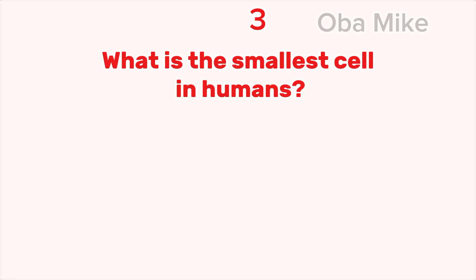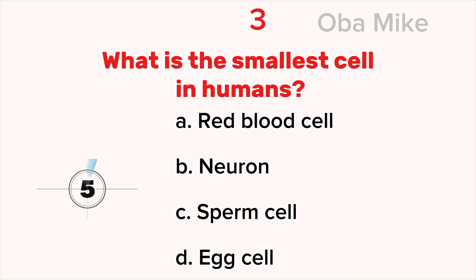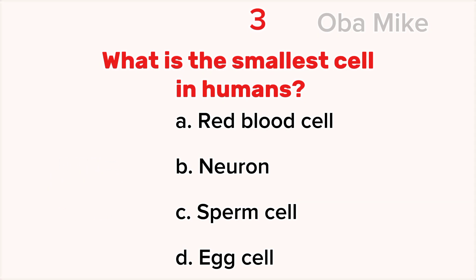3. What is the smallest cell in humans? A. Red blood cell, B. Neuron, C. Sperm cell, D. Egg cell. The correct answer is C. Sperm cell.